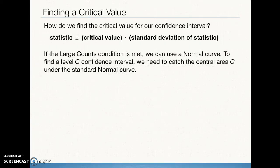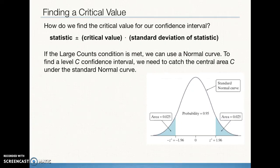We need to figure out how to find the critical value. For a 95% confidence interval, the area left over is 1 minus 0.95, which is 0.05 — split as 0.025 on each tail. Looking on Table A for a z-score with area 0.025 from the left, we find negative 1.96.